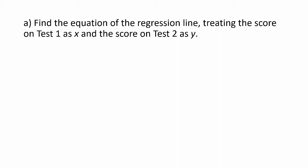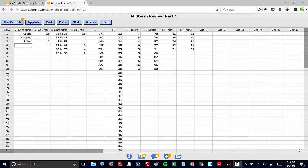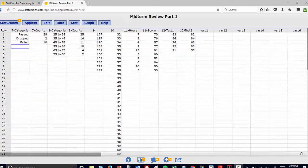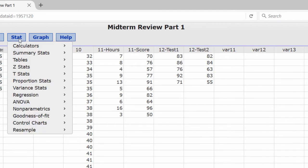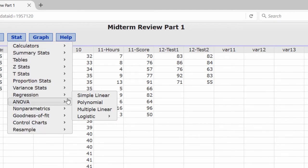Let's turn to StatCrunch. The data are typed in the last two columns, 12-test1 and 12-test2. To compute the regression equation, press Stat, Regression, Simple Linear.